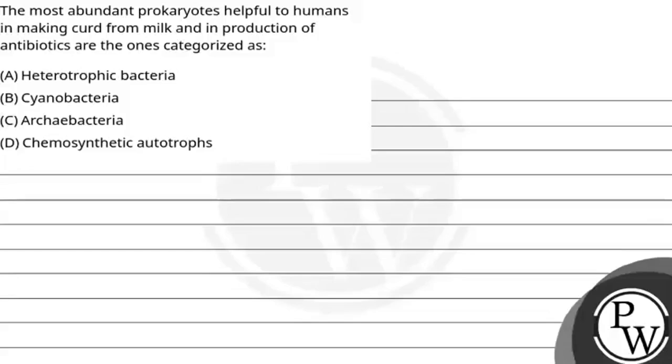Hello, children. Let's read the question. The question says that the most abundant prokaryotes helpful to humans in making curd from milk and in production of antibiotics are the ones categorized as, and we have options given.